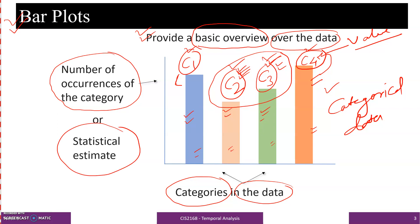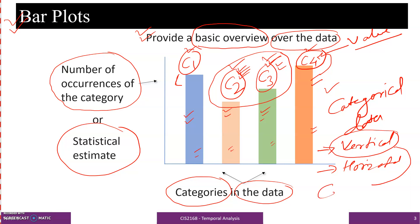The benefit of bar plot is that by looking at the length or height of the rectangle, we can clearly see which category has higher value and which has lower value. This is known as the number of occurrences of the categories or statistical estimation. We can plot a vertical bar plot or a horizontal bar plot, and the vertical bar plot is sometimes referred to as a column bar plot. These are the basic points for bar plot.